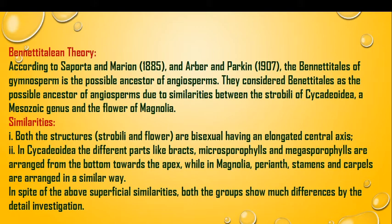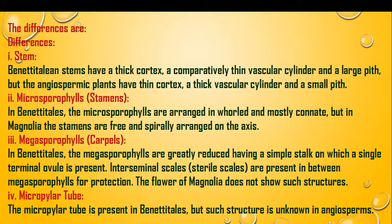Both show a strobilus which is like a flower in the case of the Bennettitalian theory, which can support the same ancestry or phylogenetic arrangement. However, in spite of the above superficial similarities, both groups show many differences on detailed investigation. Some differences are also found between Bennettitalian members and angiospermic plants.